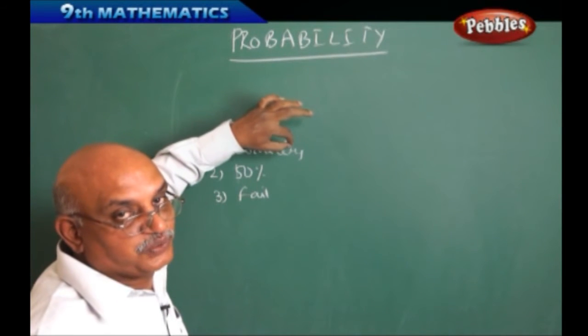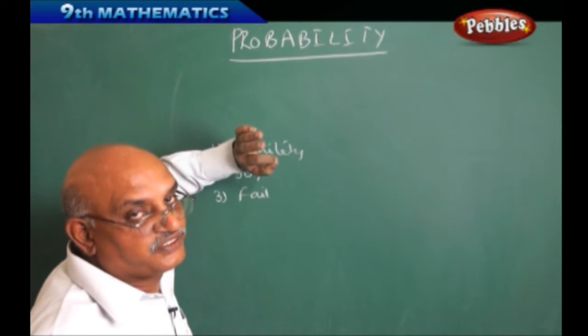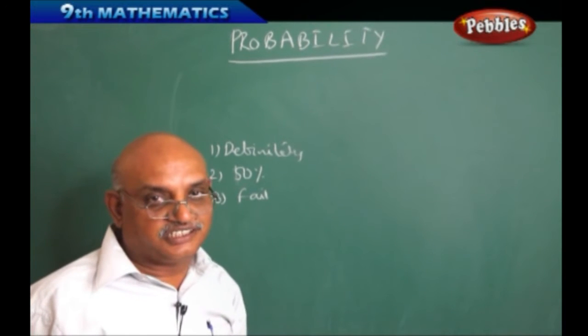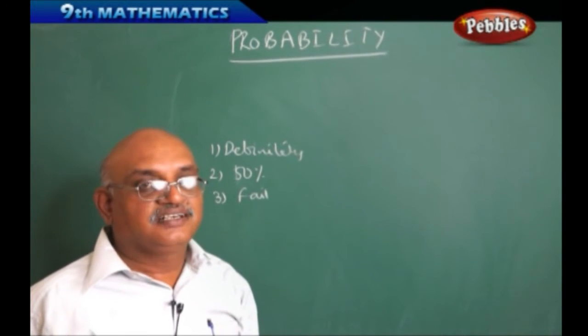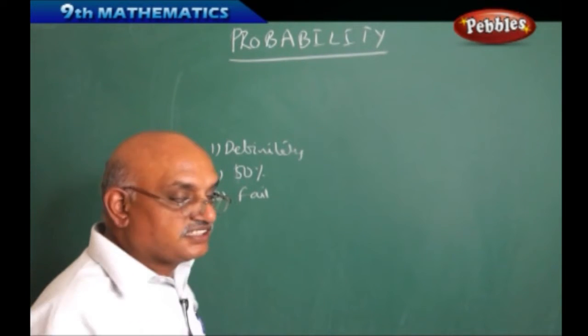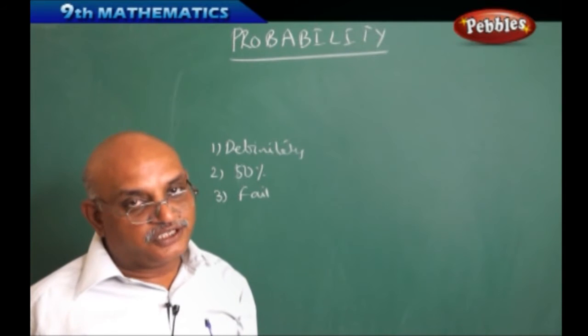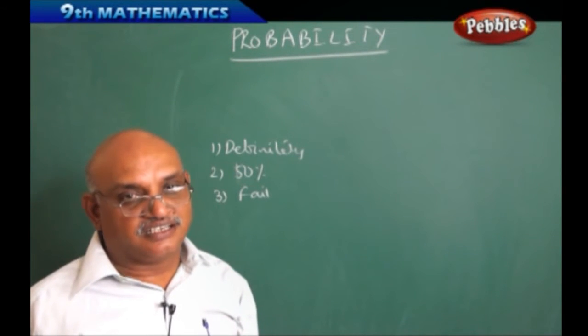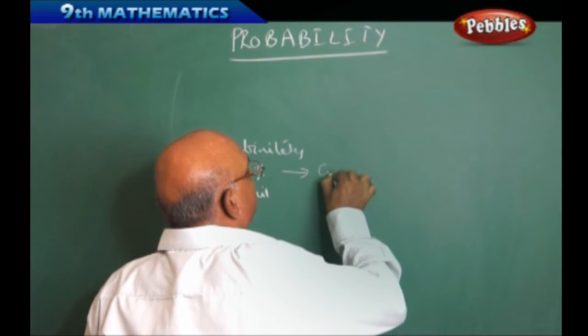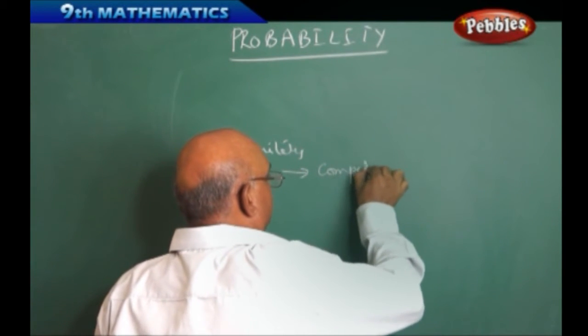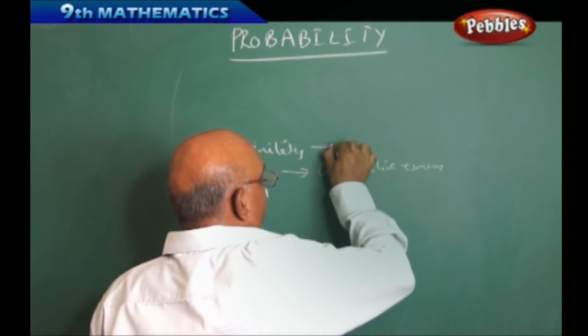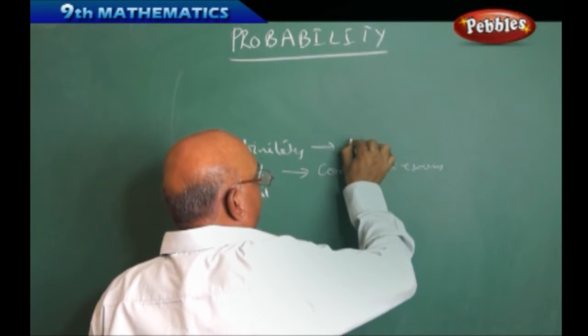There are three things if you observe carefully. Definitely they are going to pass - that implies they are quite confident about the incident. They appeared for the examination with 100% confidence and answered all the questions. 50% chance says that we don't know whether how many questions I wrote correctly or not. Generally these incidents arise in case of competitive exams. These cases arise generally in a class test.